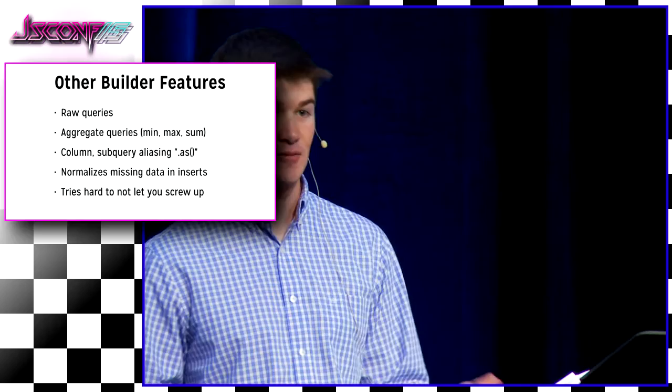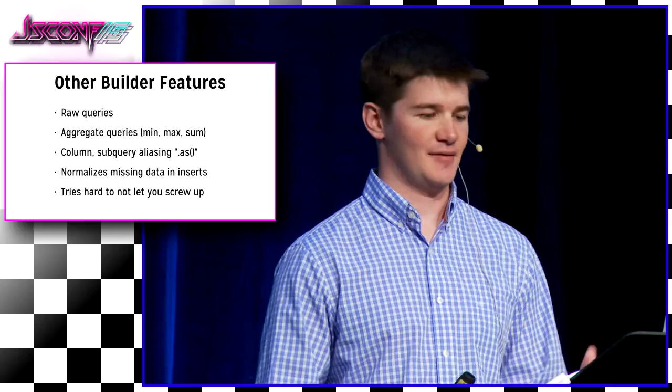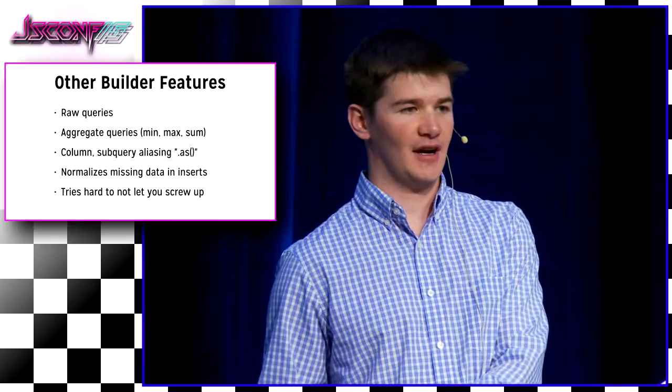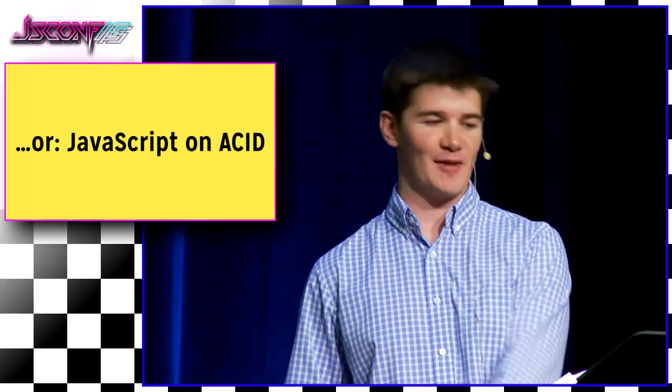It also does joins with multiple clauses, and subqueries. So here we have a where-in clause, and anywhere you might want to use a subquery, the general rule of thumb is that you can pass a function and use the context of that closure as a new subquery. From there you can do raw queries if you have a specialized query that does things not supported by Knex, aggregates, and subquery aliasing. What it really tries to do is tries hard not to let you screw up — it tries to catch different errors or paper over things for you so you don't make too many mistakes.